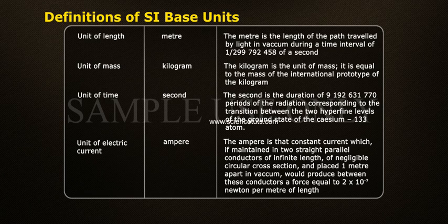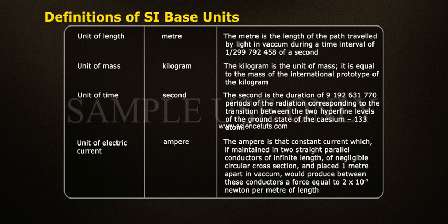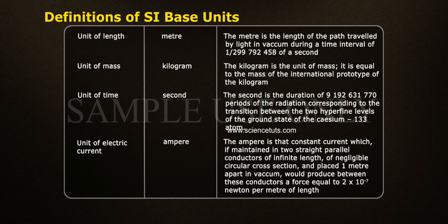Unit of Electric Current: Ampere. The Ampere is that constant current which, if maintained in two straight parallel conductors of infinite length of negligible circular cross-section and placed one metre apart in vacuum, would produce between these conductors a force equal to 2 × 10⁻⁷ newton per metre of length.